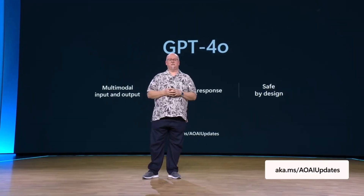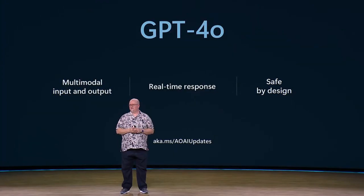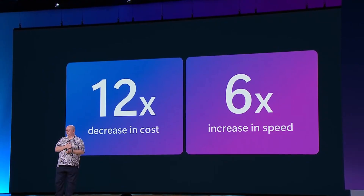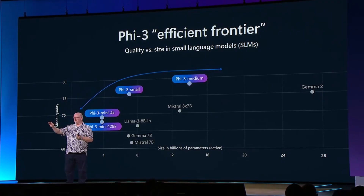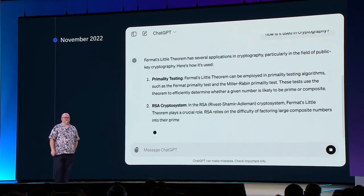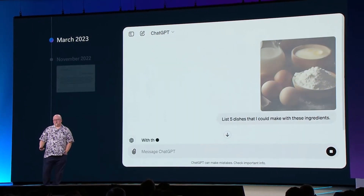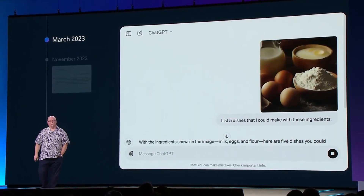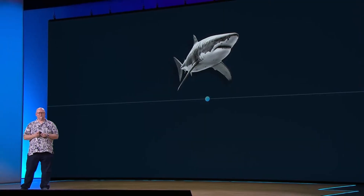OpenAI, GPT-4o, ChatGPT, GPT-4, GPT-4o5. ChatGPT launched on top of GPT-3.5, then GPT-4, and now GPT-4o. Generative AI.